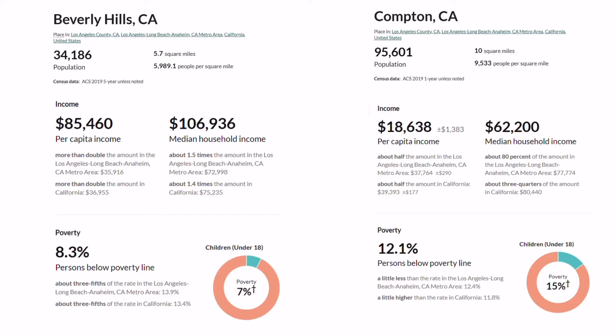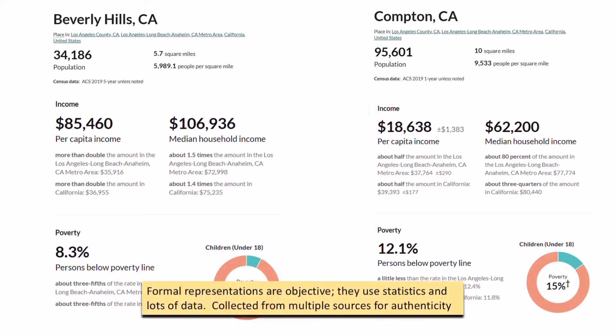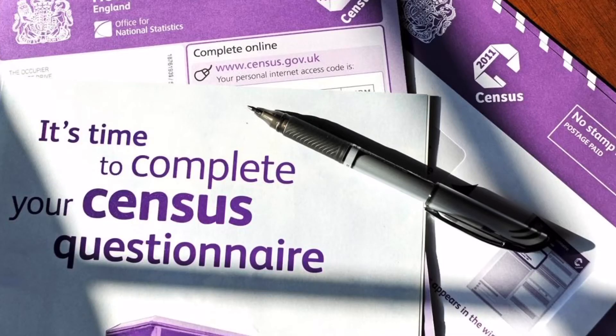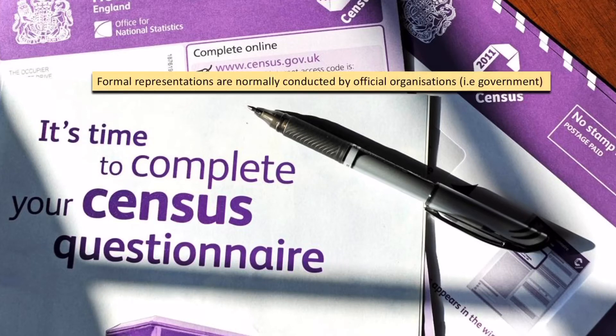Here is some actual formal representation — this is official data collected in the census. It tells us how much people earn in terms of per capita income and how many people are below the poverty line. Formal representations are often more objective; they use statistics and get data from multiple sources, which makes them more authentic. Official formal representations are normally not created by individuals — they are created by larger organisations like governments and educational organisations.